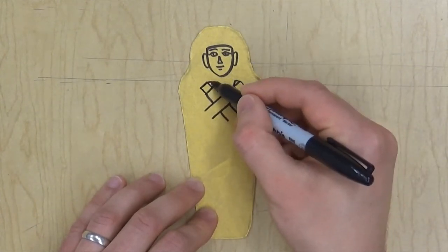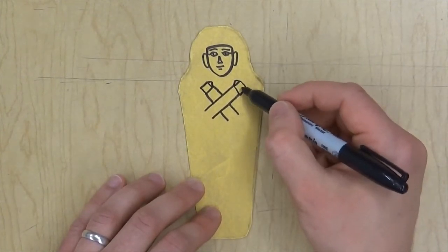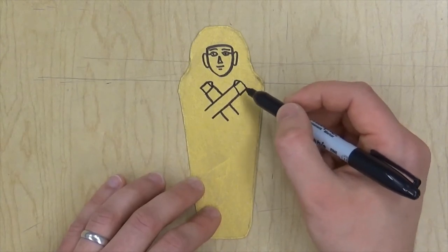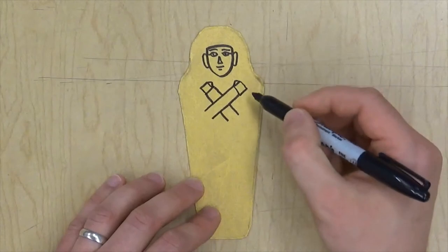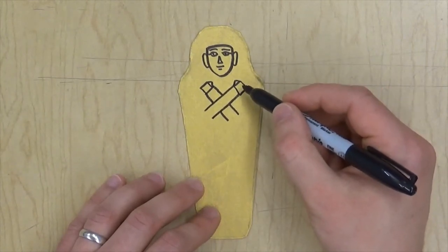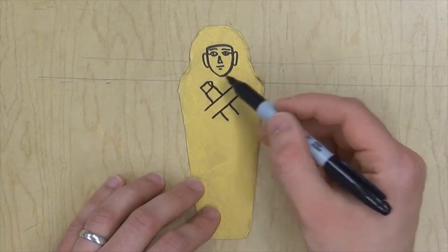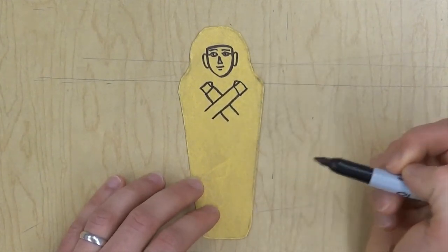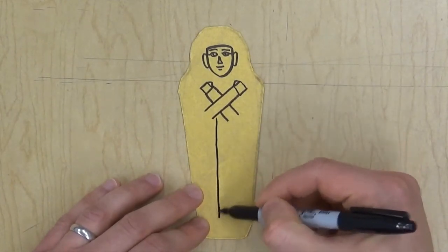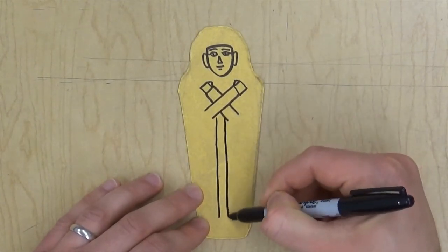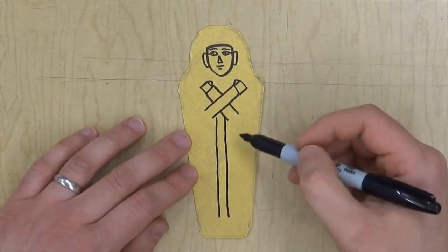This hand would be holding a flail and this hand would be holding a crook. It would look like a hook and this would look like a whip, but I'm not going to add that—you can if you want. I am going to do a strip right down the middle and a little line at the bottom. This represents where the feet would be.